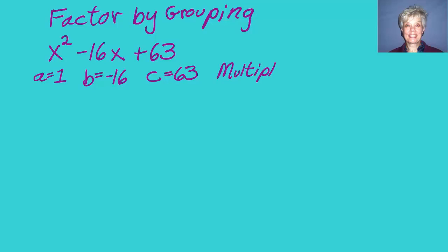We're going to multiply the a number, which is in front of x squared, by the c number, which is the constant at the end. So a times c is 1 times 63, which is, you guessed it, 63.